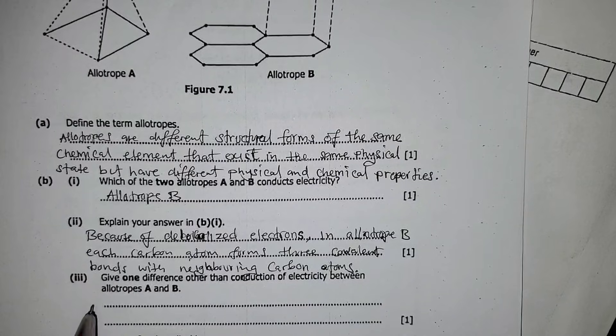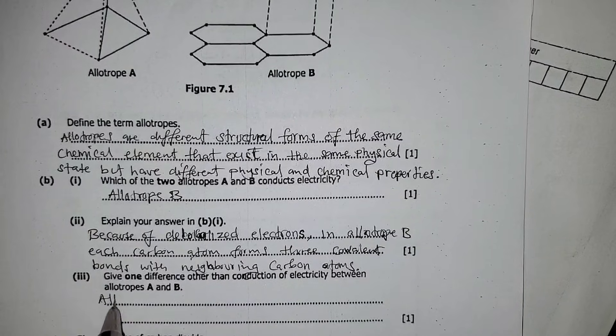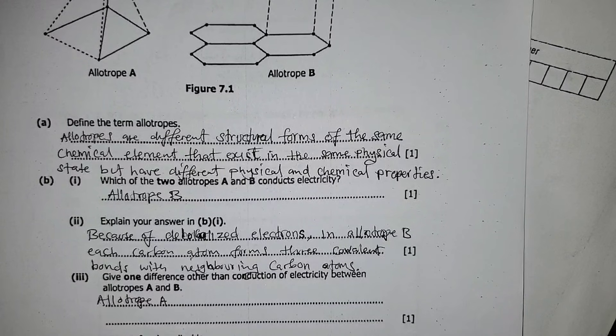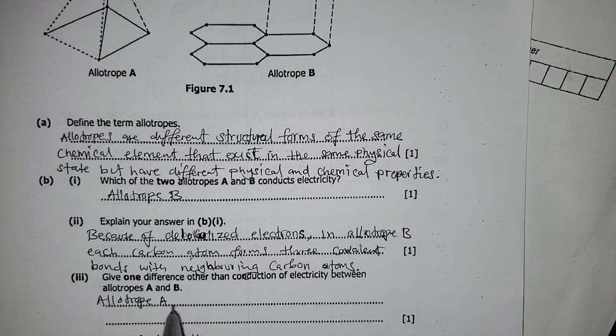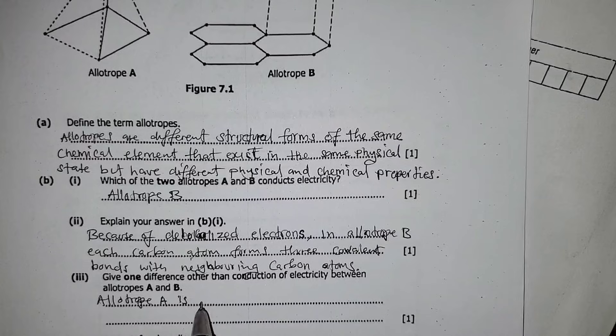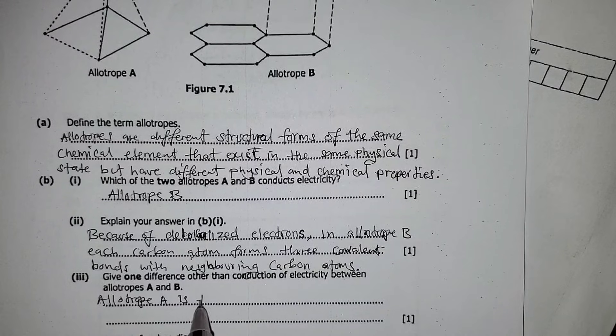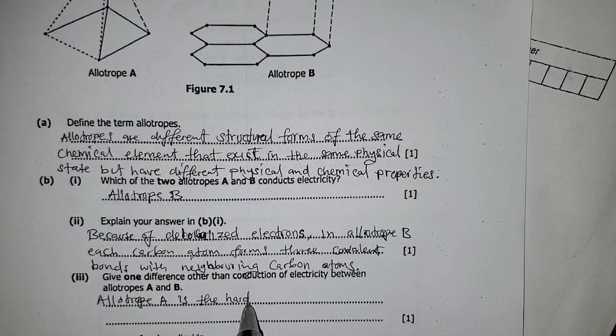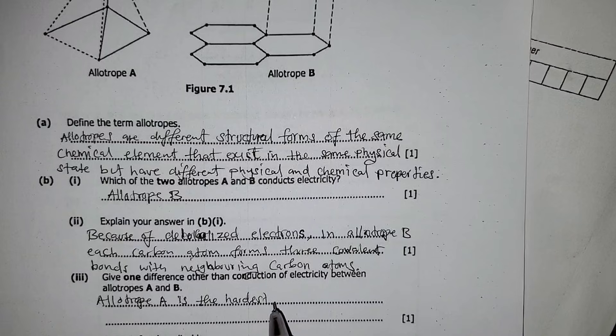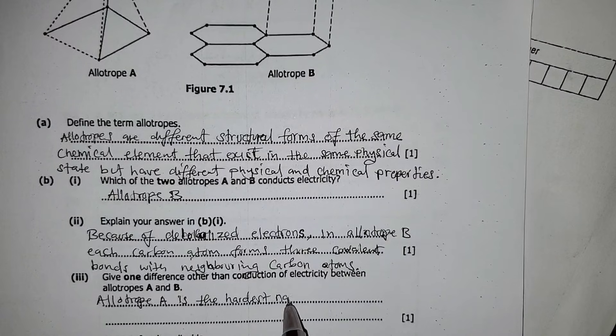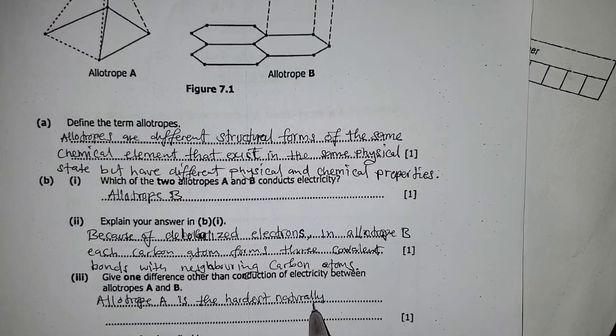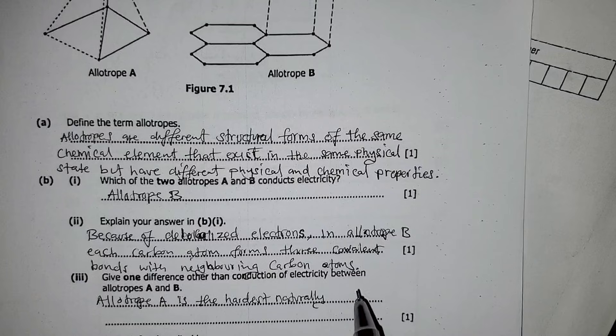So you can say allotrope A is the hardest naturally occurring substance.